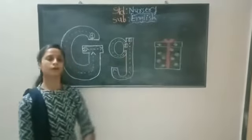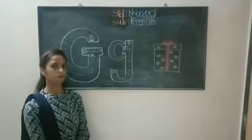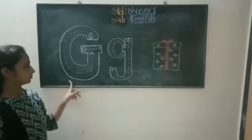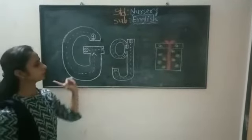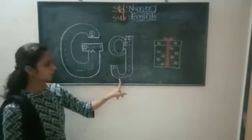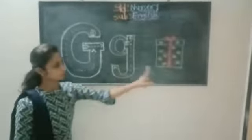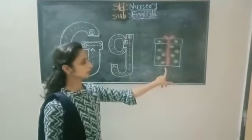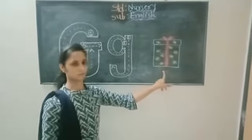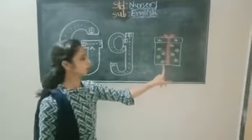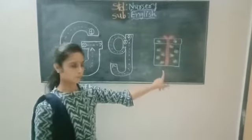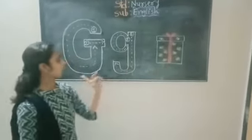Today we are going to learn about the alphabet — Mama G for gift and Baby G for gift. What is this, children? This is a gift box. What is this? Gift box.